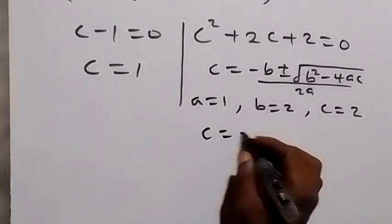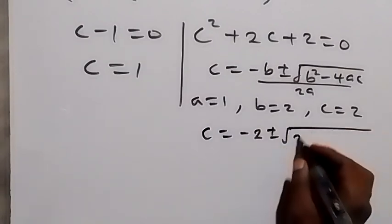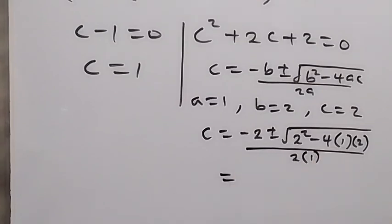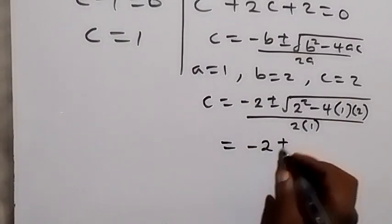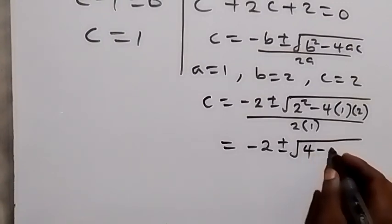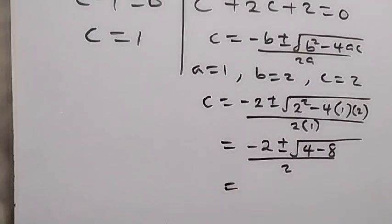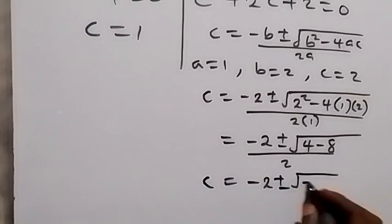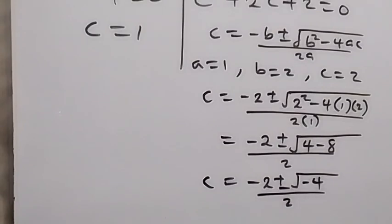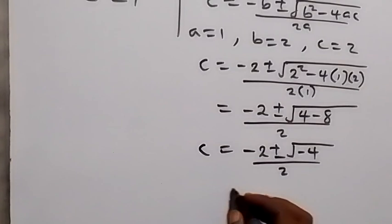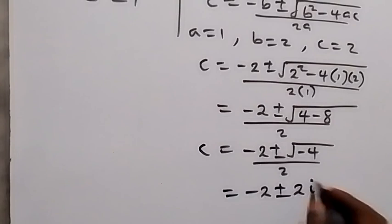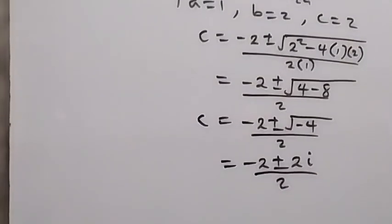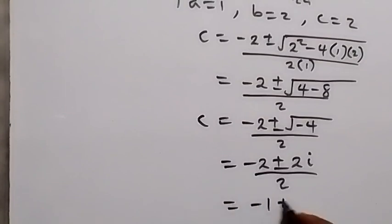So c equals minus 2 plus or minus square root of 2 squared minus 4 times 1 times 2, over 2 times 1. This gives c equals minus 2 plus or minus square root of 4 minus 8, over 2, which is minus 2 plus or minus square root of minus 4, over 2. Since square root of minus 4 equals 2i, dividing through by 2 gives c equals minus 1 plus or minus i.